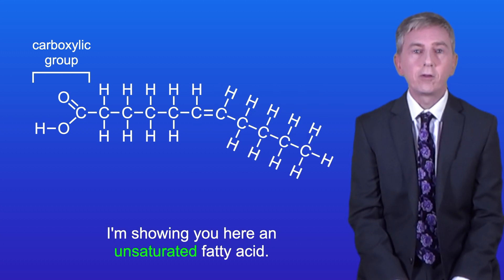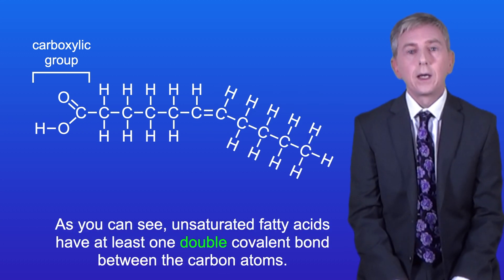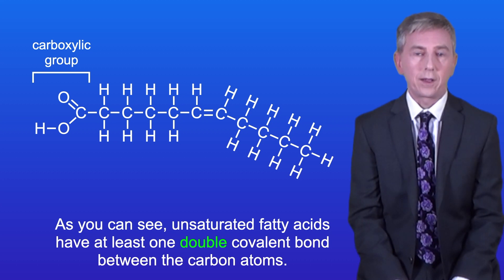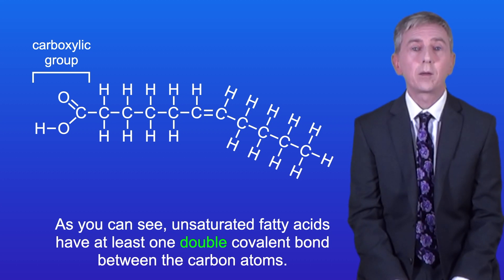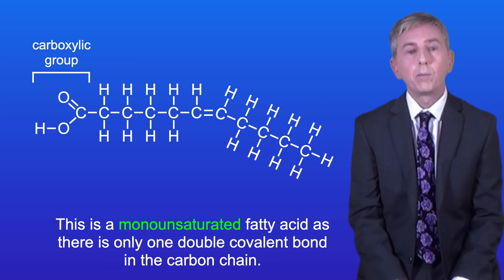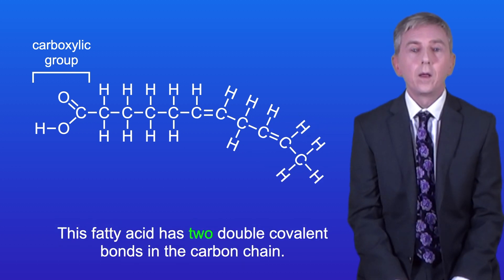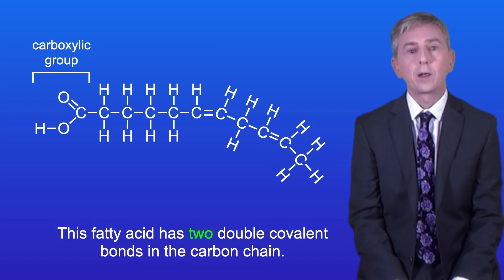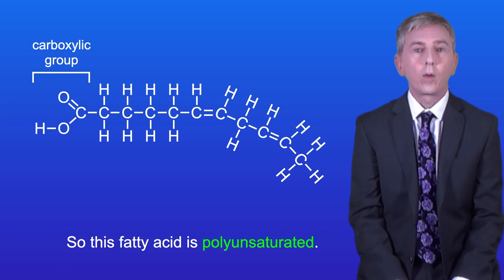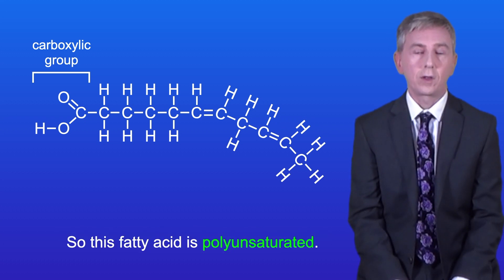I'm showing you here an unsaturated fatty acid. As you can see, unsaturated fatty acids have at least one double covalent bond between the carbon atoms. This is a monounsaturated fatty acid as it has only one double covalent bond in the carbon chain. This fatty acid has two double covalent bonds in the carbon chain, so this fatty acid is polyunsaturated.